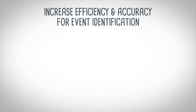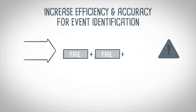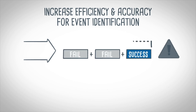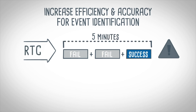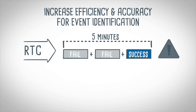For example, consider a rule that looks for brute force attacks and fires an alert any time there are two failed logins followed by a successful login within a five-minute window. ArcSight's RTC engine monitors for this series of events in real-time, checking against every possible five-minute time frame.